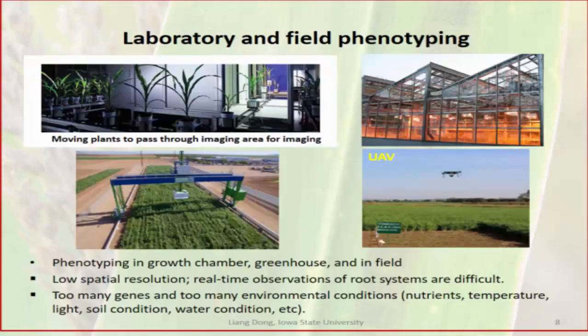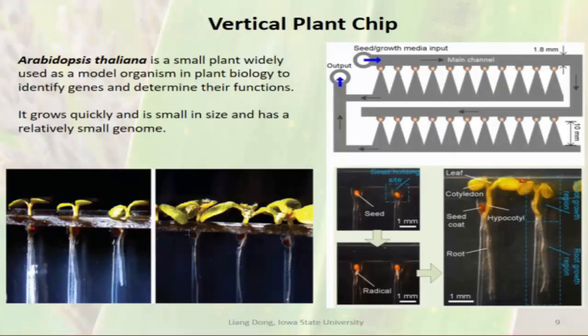Right now there are many ways to get plant phenotype measurements—for example, greenhousing in a growth chamber, moving plants to a classified imaging area, pulling out plants to measure root length and weighing them. People also use greenhouse setups with large robots in the field to capture images, and drones sent into the sky to take aerial images.